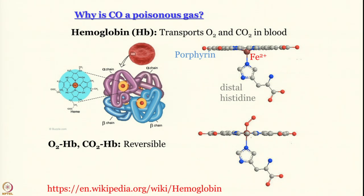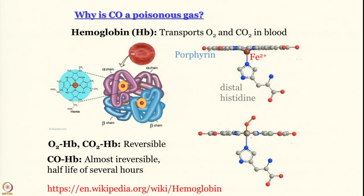The problem is that carbon monoxide forms carbonyl complexes that are extremely stable — the formation is almost irreversible, with a half-life of several hours. If somebody is exposed to carbon monoxide, many of the hemoglobin molecules will form this very stable carbonyl complex with carbon monoxide, which will not break easily. They will not be able to participate in oxygen and carbon dioxide transport, which is most important for life processes.